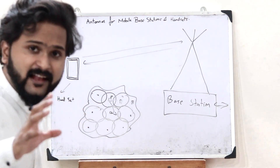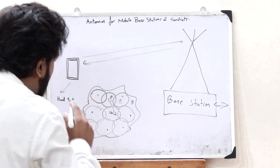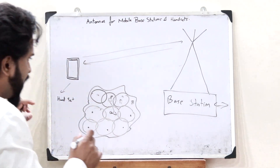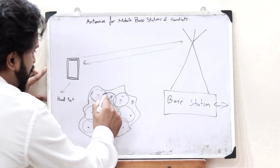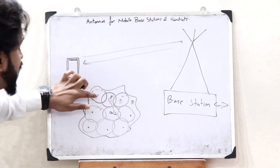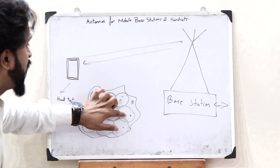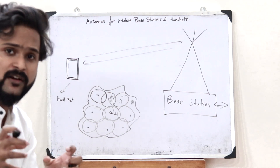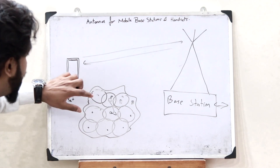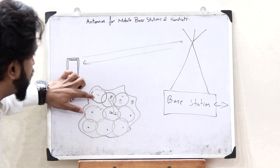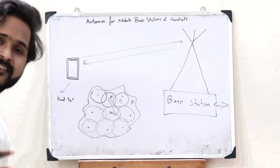One important thing to keep in mind is that a base station antenna must be highly directive. The intention of this base station antenna is to connect the handsets within its particular coverage area. It is not required to connect to smartphones outside that area — the sole purpose of a particular base station is to connect to handsets in its specific region.